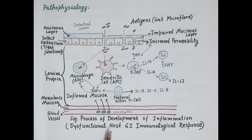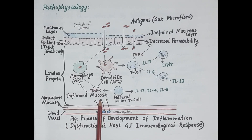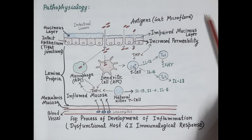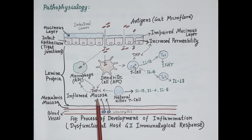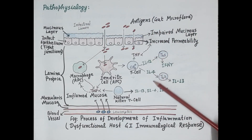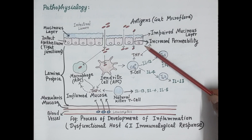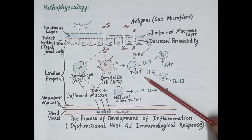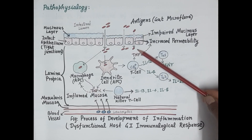Very importantly, ulcerative colitis is characterized by a dysfunctional host immune response — there is abnormal interaction between the gut microflora and the body's immune system. Because of the increased permeability, antigens invade the intestinal cells, reach the lamina propria, and stimulate the immune system.